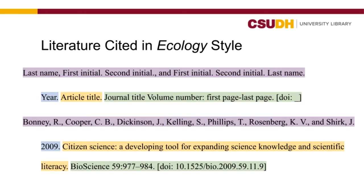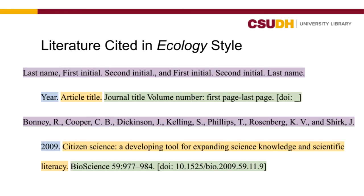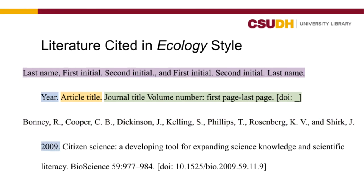In this class, you'll probably be citing a lot of academic journal articles. First, include the last name and initials of the authors. Use the word AND before the last author, then include the year the article was published. Next, include the title of the article in sentence case. This means only the first word of the title and subtitle, and any proper nouns are capitalized.